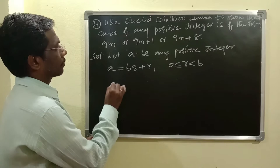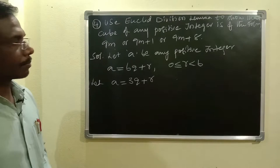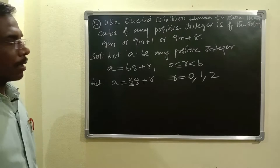Now we are assuming A equals 3Q plus R. Since B is 3, the R values can be 0, 1, and 2.